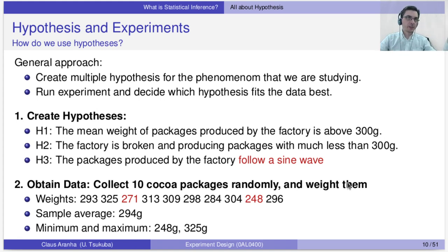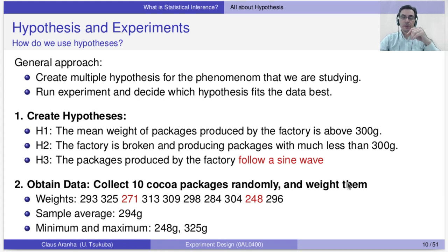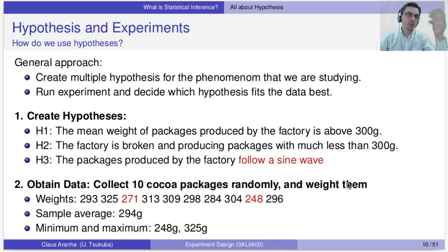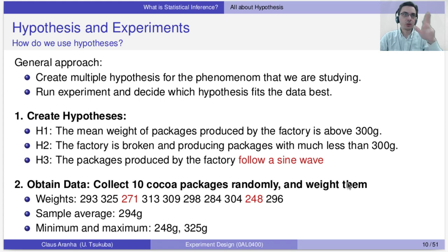Step one: create hypotheses. Hypothesis 1: the mean weight of packages produced by my factory is above 300 grams. Hypothesis 2: the factory is broken so the packages have much less weight than 300 grams. Hypothesis 3: the packages produced by the factory follow a sine wave. Next, we do our experiment — collect 10 cocoa packages randomly and weigh them. Here are some weights: 293, 325, 271, 311, etc. After collecting the weights we calculate some statistics — for example the sample average, which is 294 grams — and the minimum (248) and maximum (325). Now, looking at this data, which hypothesis does it support best?